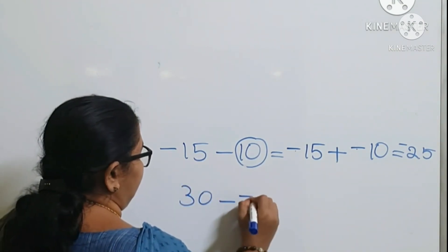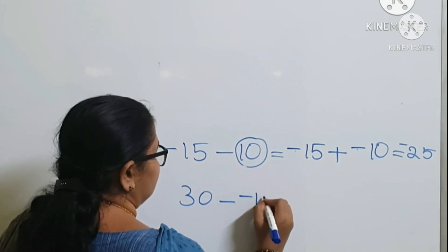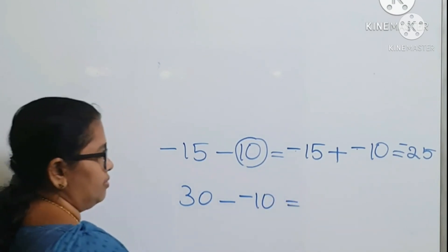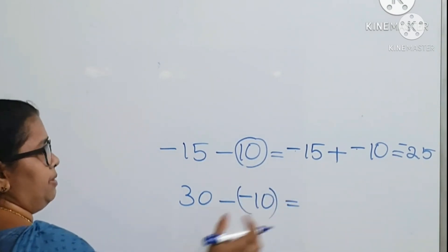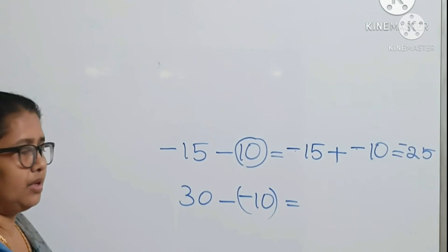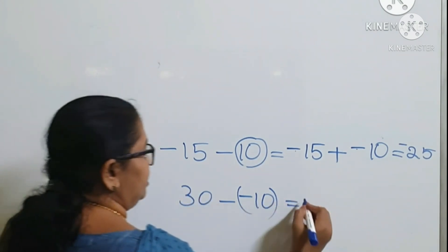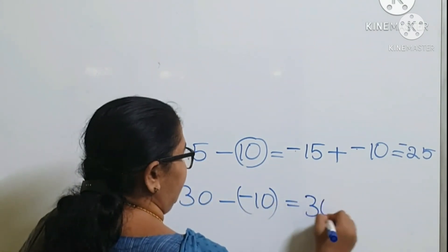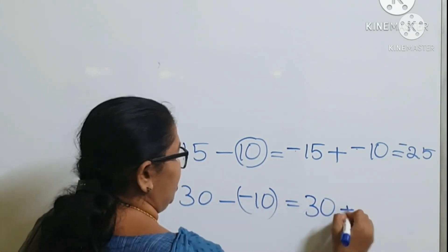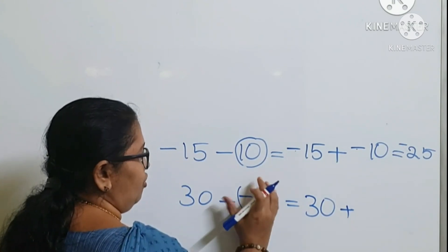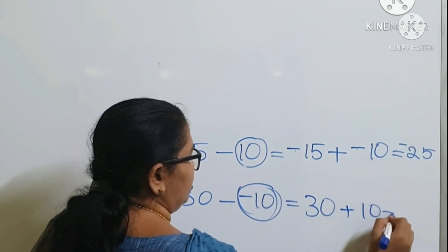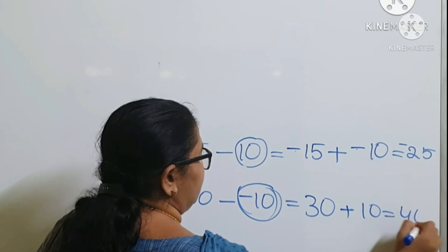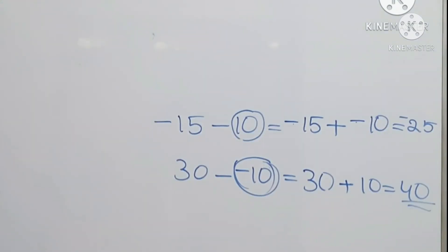Another example: 30 minus minus 10. The first integer is 30. The subtraction is changed to addition, and the additive inverse of minus 10 is plus 10. Both are positive integers, so we add them and place the same sign, giving 40.